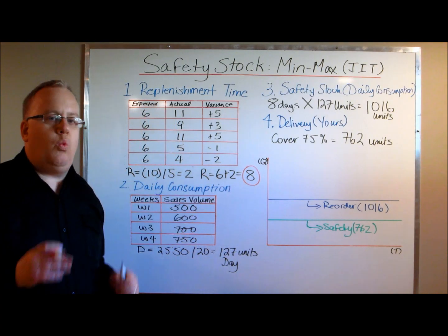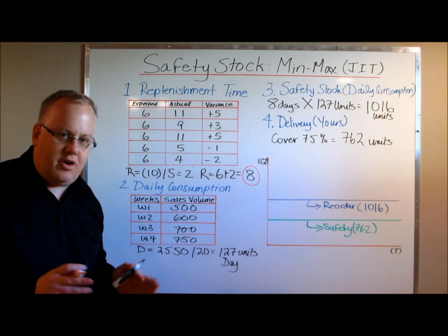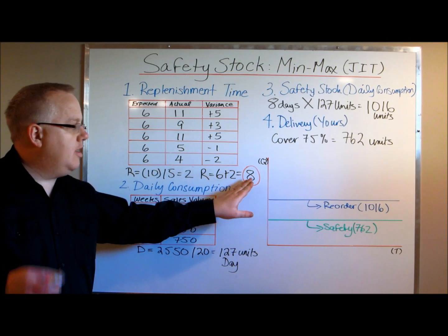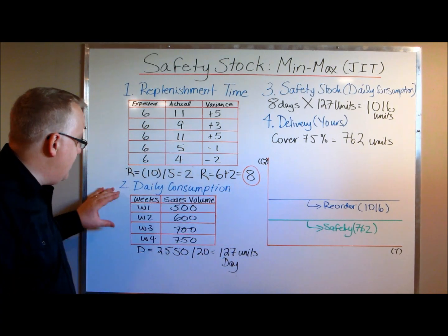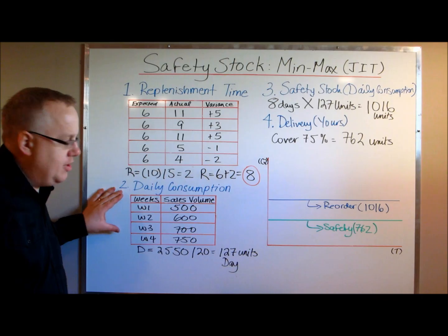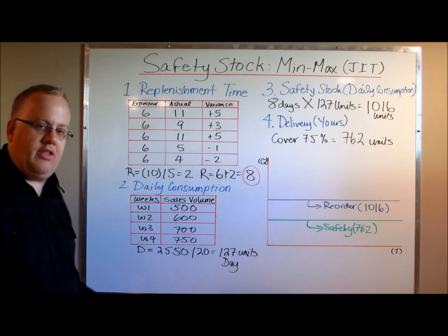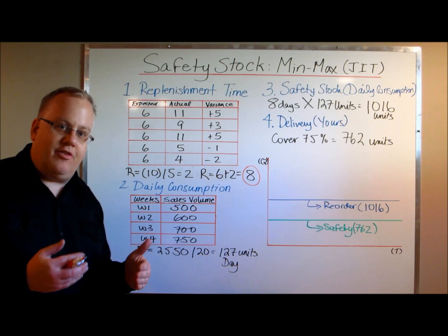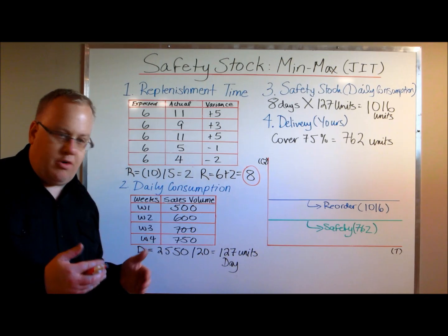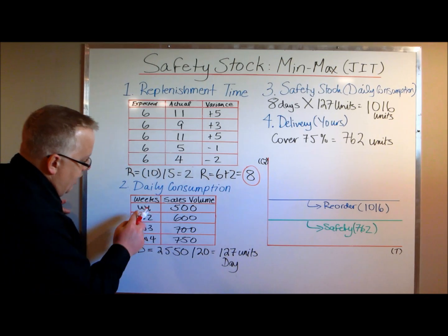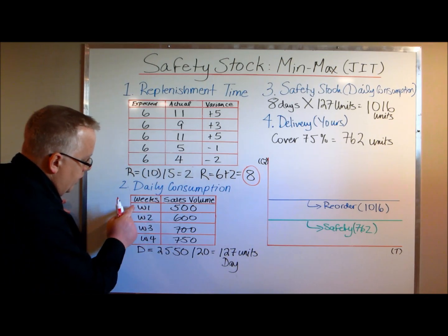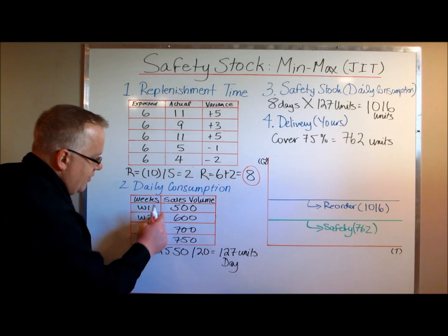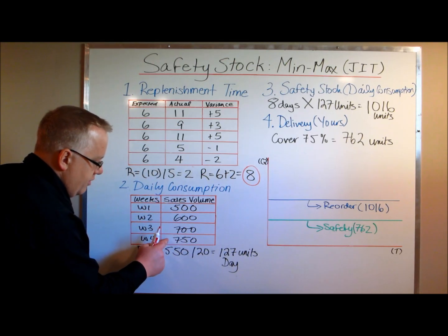This number means we must cover enough inventory to support the company's sales for eight days, which leads us to the second step: daily consumption. This pertains to the average daily sales of this particular product. I've accounted for four weeks — weeks one, two, three, and four — with sales volumes of 500, 600, 700, and 750 units.